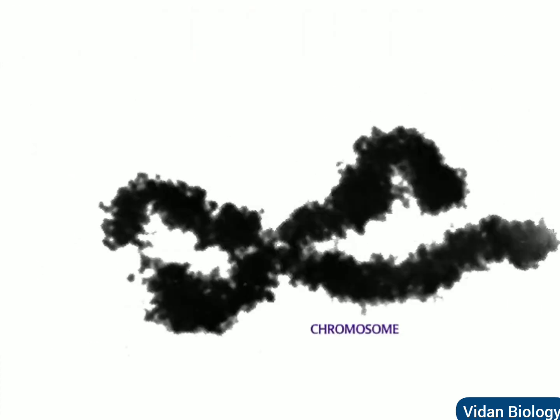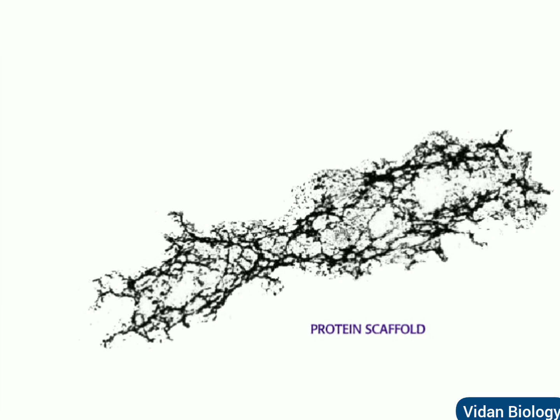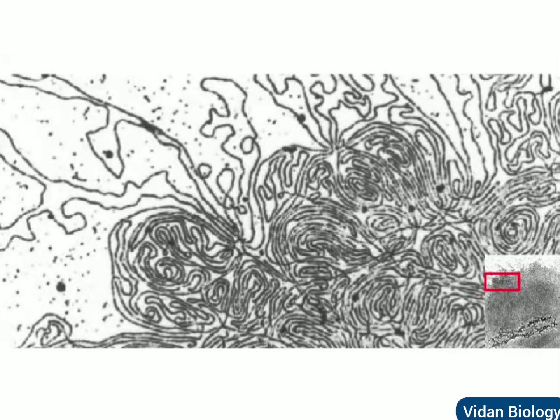Even more organization is involved in maintaining the condensed chromosome. Loops of DNA are attached to a protein scaffold made up of several non-histone proteins. This scaffold maintains the shape of the chromosome even in the absence of histones. Chromosomes are really one continuous piece of DNA, as you can see in this electron micrograph showing the DNA strand from one chromosome after the histones have been removed.